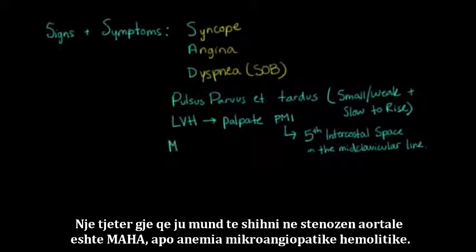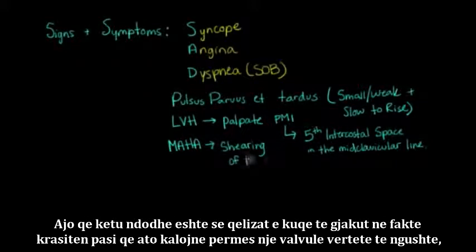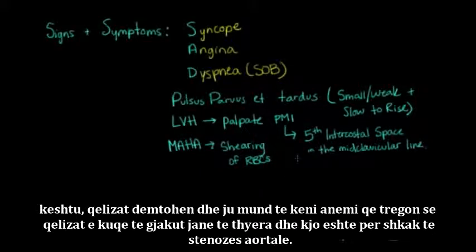Another thing that you can see in aortic stenosis is MAHA, or microangiopathic hemolytic anemia. What happens here is that red blood cells actually get sheared as they go across the really tight valve. The cells are broken apart, and you can get an anemia showing fragmented red blood cells due to the aortic stenosis.